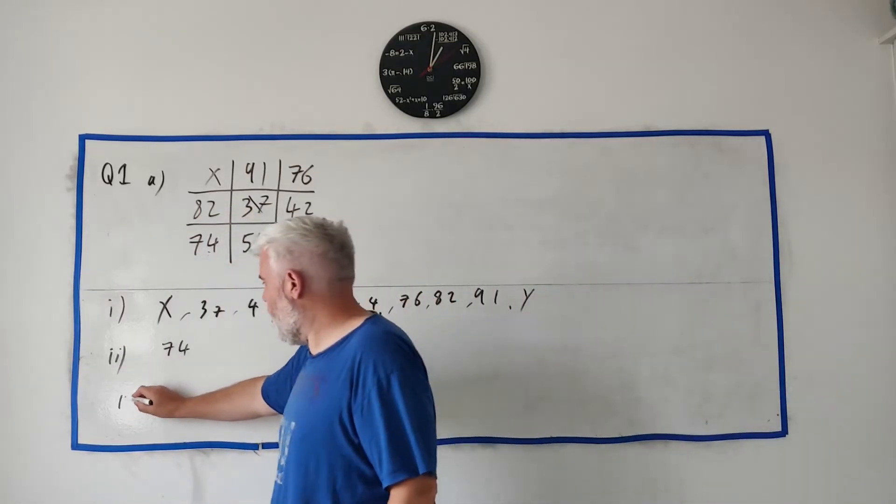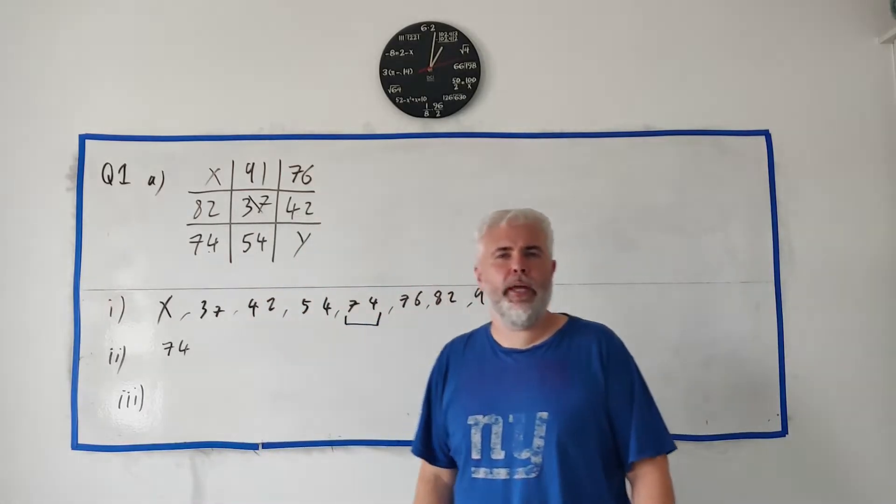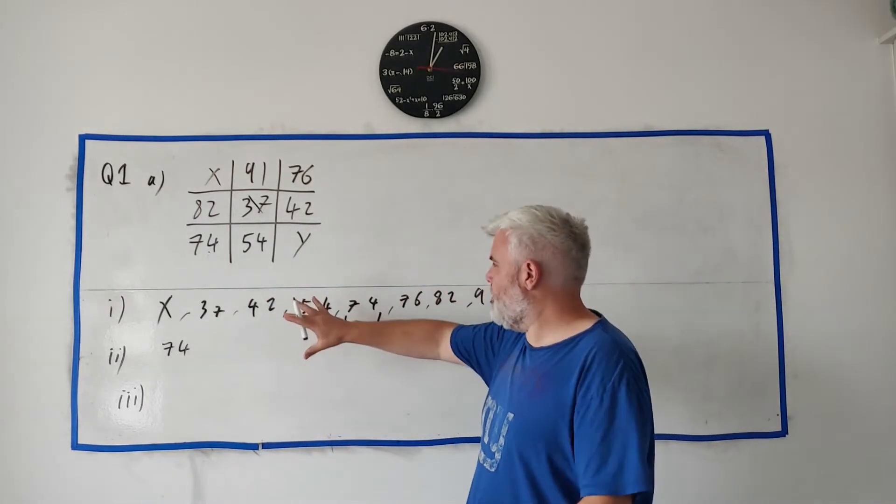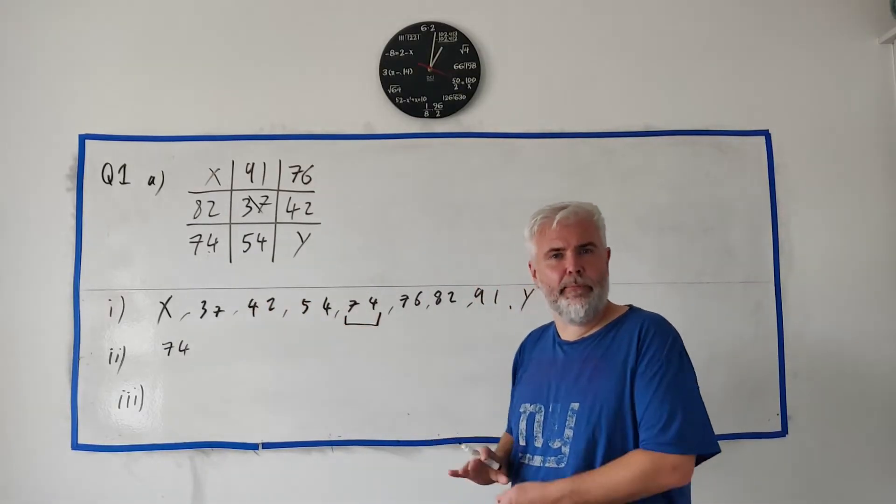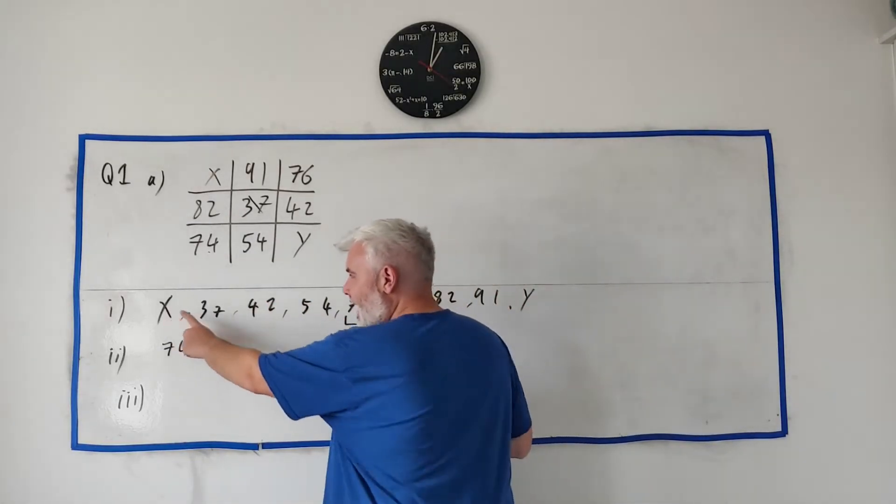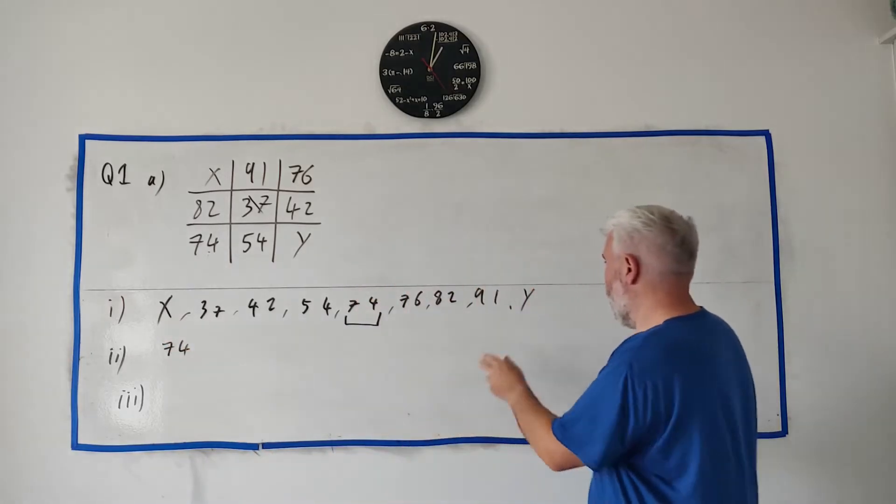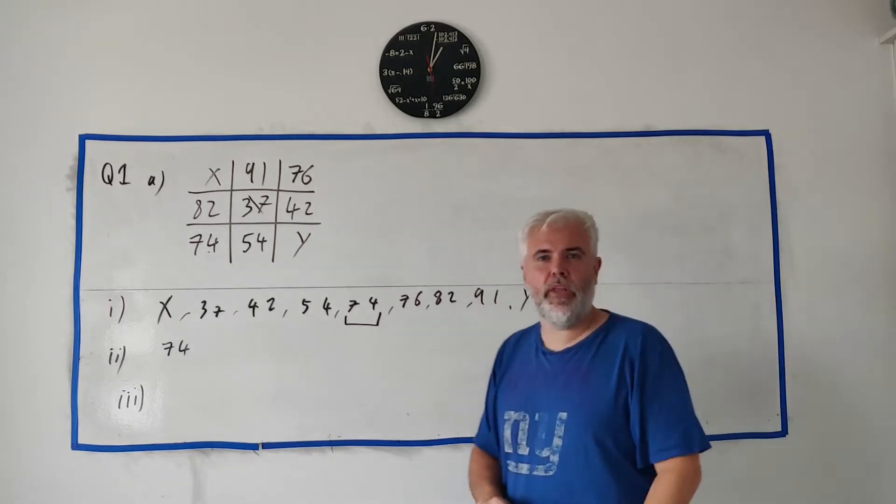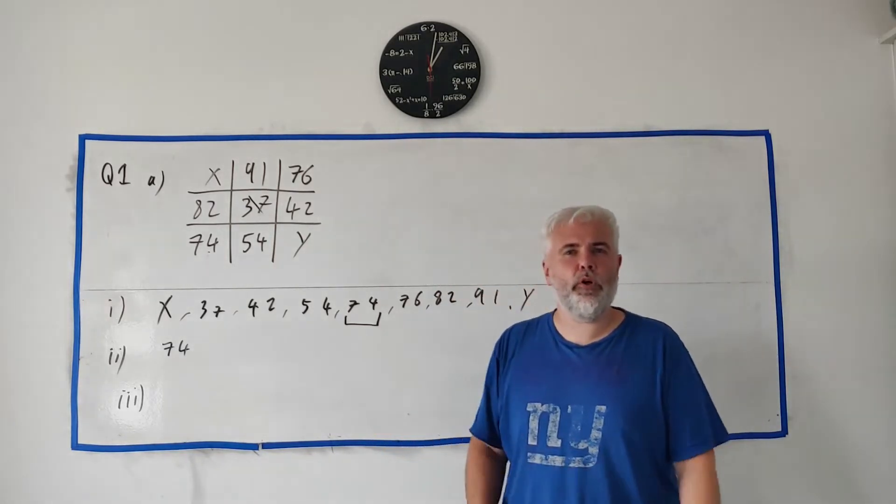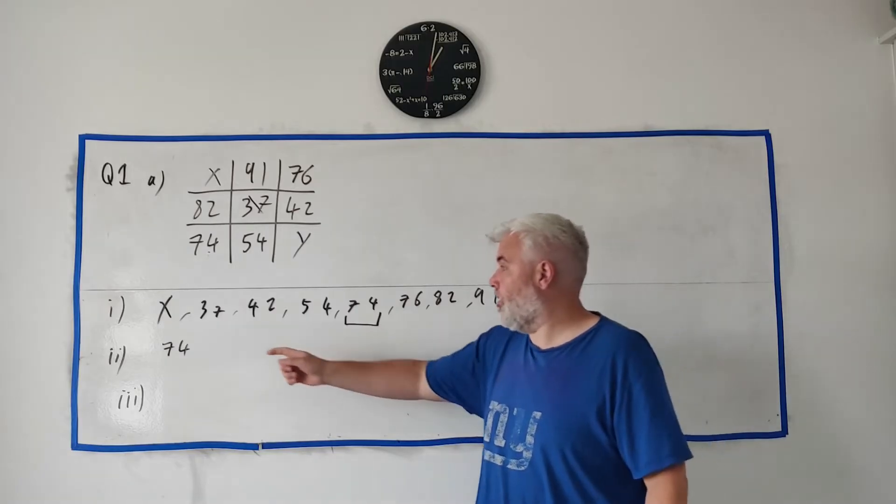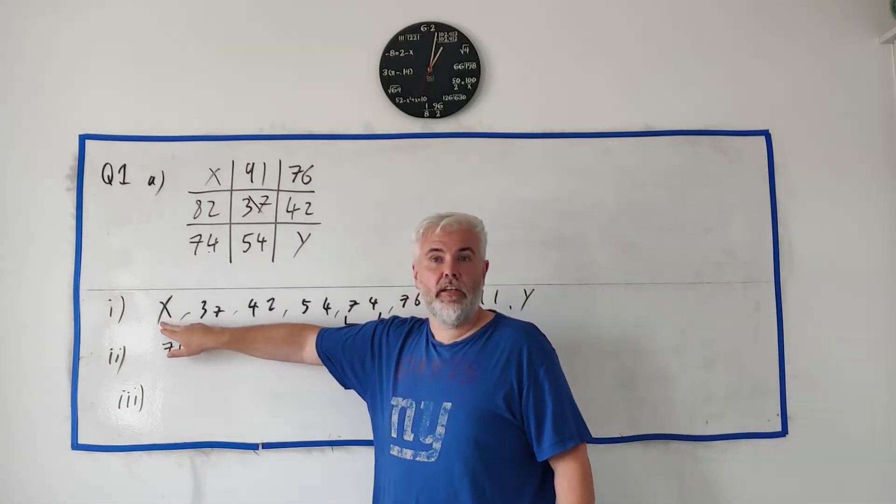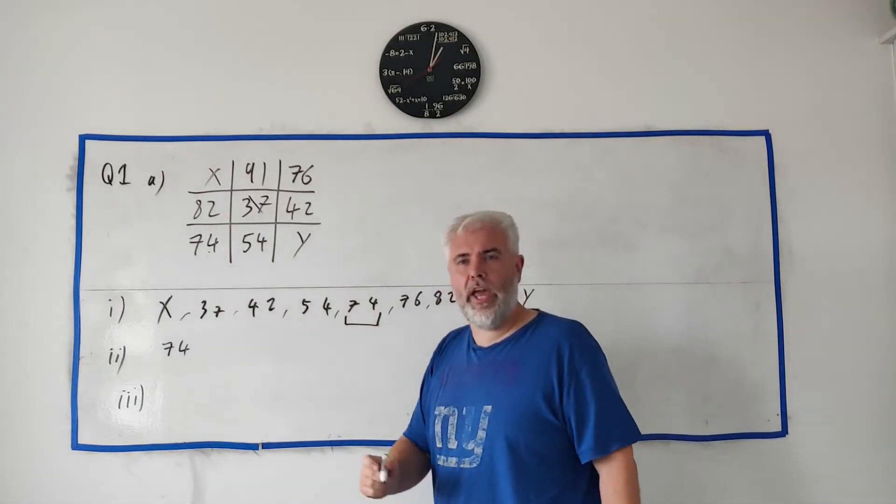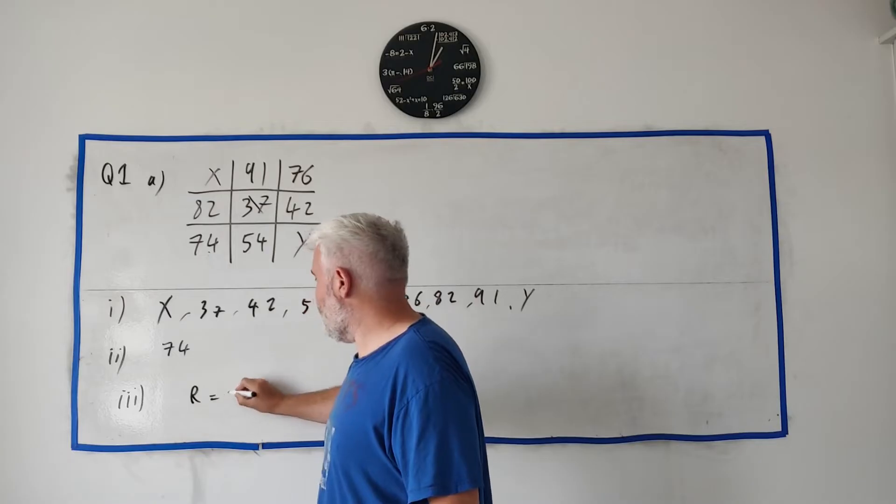For part three of this question, and this is where it gets a little more difficult, it's sort of like a little thought puzzle. They tell you all of these students got different scores, like no numbers the same. Really, all that's telling you is X is not 37 and Y is not 91. It has to be 92, 93, 94, something bigger than 91. And they give you the puzzle, work out the maximum number of points that X could have got and the corresponding number for Y. Oh sorry, they also tell you the range is 61.